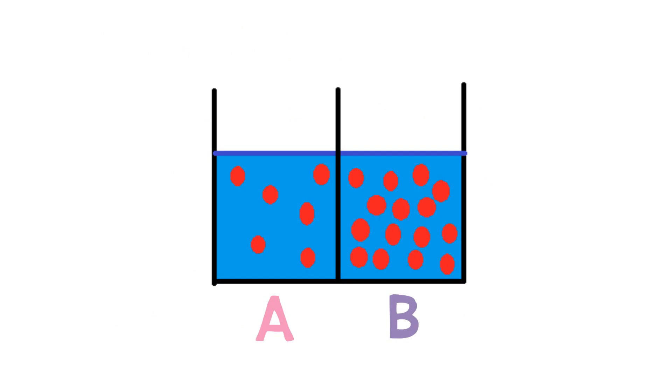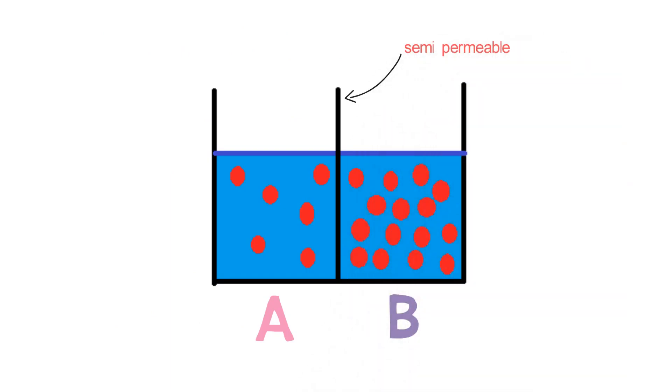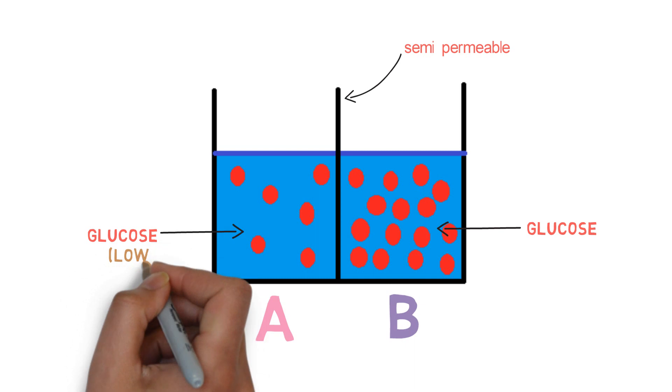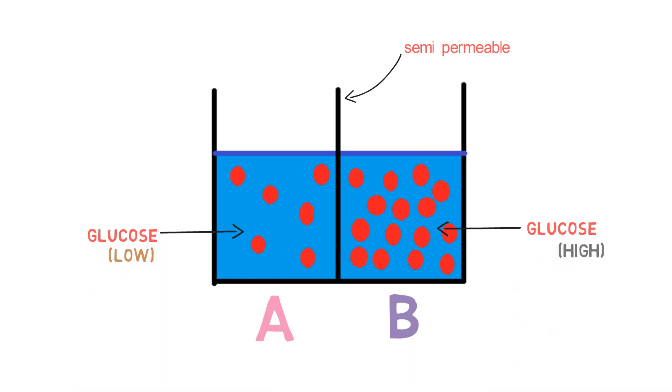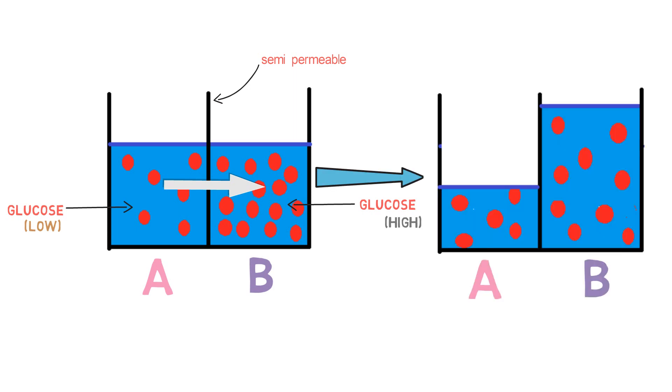Let's take an example. A and B solutions are separated by a semi-permeable membrane. Both A and B contain glucose. The amount of glucose dissolved in solution A is low compared to the amount dissolved in solution B. So water molecules move from solution A to solution B through the semi-permeable membrane.